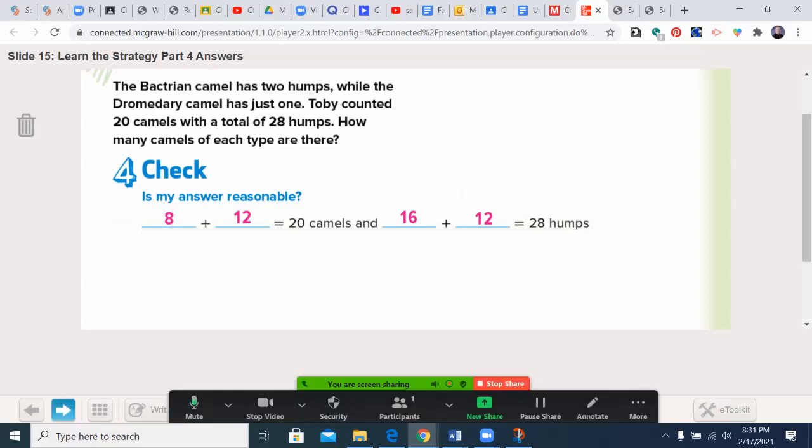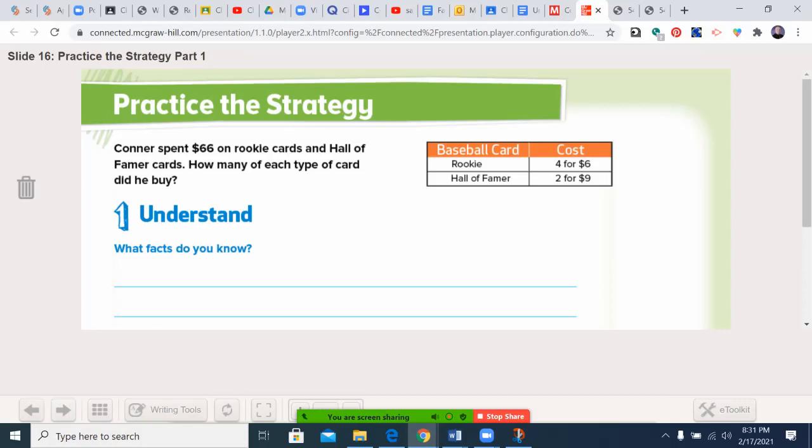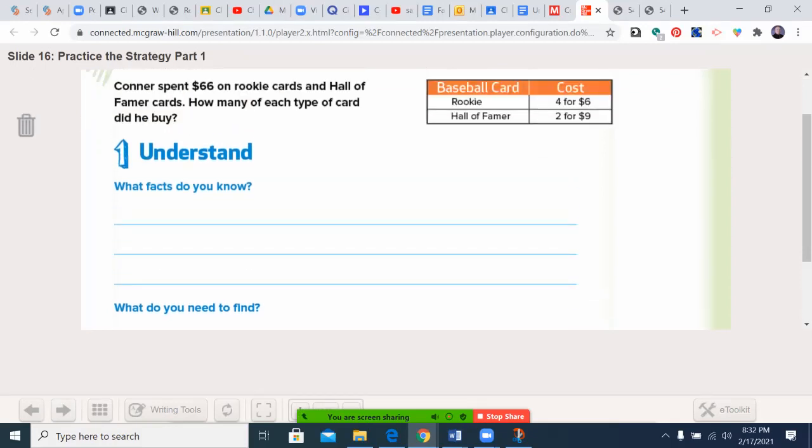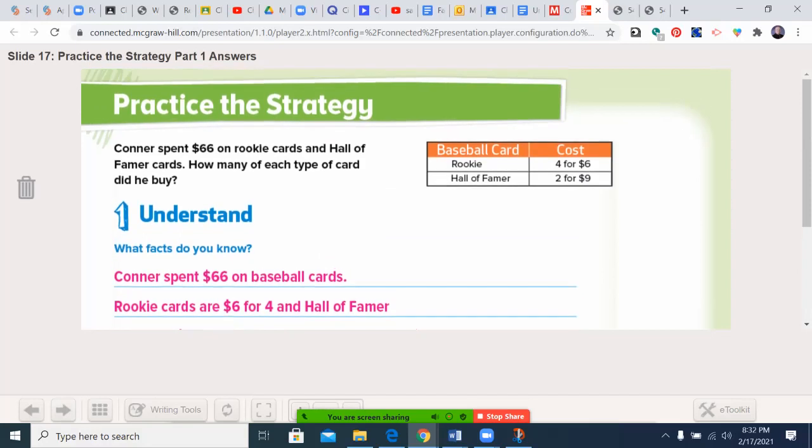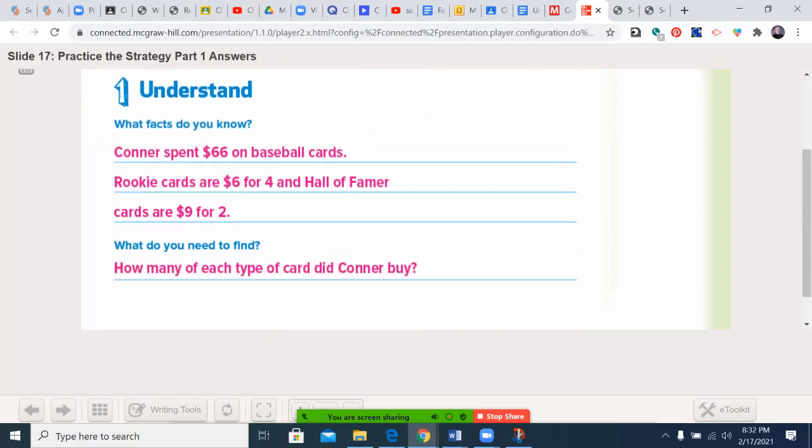Now we're going to the top of 570 to practice the strategy. We'll do this one together, much like we would do the guided practice, and assign you one or two for practice before you do the homework. Connor spent $66 on rookie cards and Hall of Famer cards. How much of each type did he buy? Connor spent $66 on baseball cards. Rookies are four for six, and Hall of Famers are two for nine.